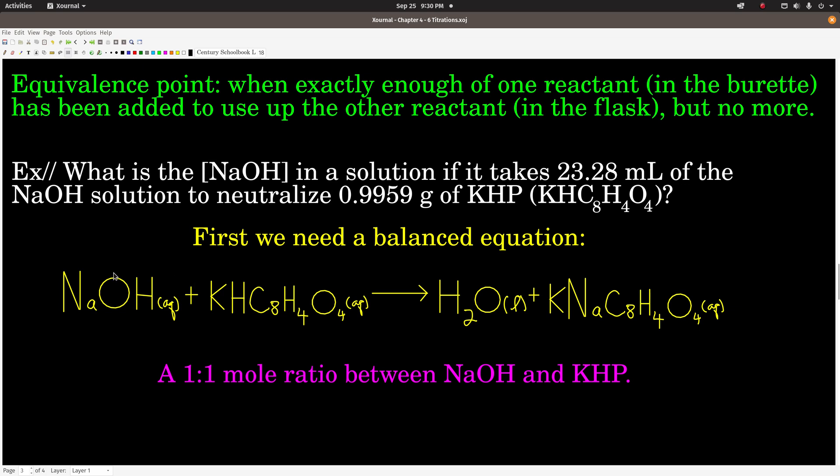Then we would say that at the equivalence point, the moles of sodium hydroxide is equal to one-half the moles of KHP. One mole of sodium hydroxide equals two moles of KHP. So just watch out for that.